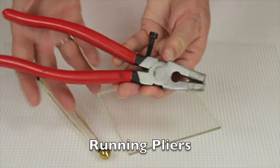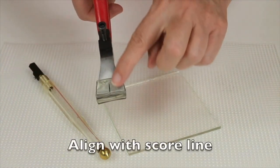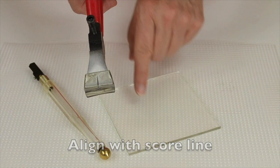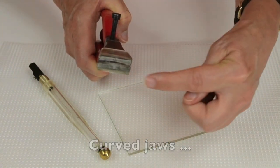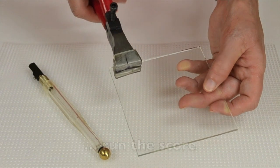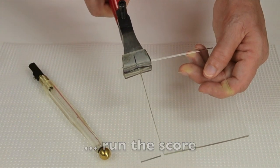I'm going to grab my running pliers. They also have a screw which you want pointing upward, and there's a line right here which you align with the score. It has curved jaws that applies even pressure on both sides of your score to run that score.